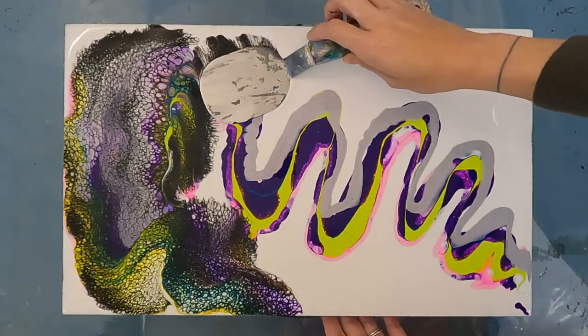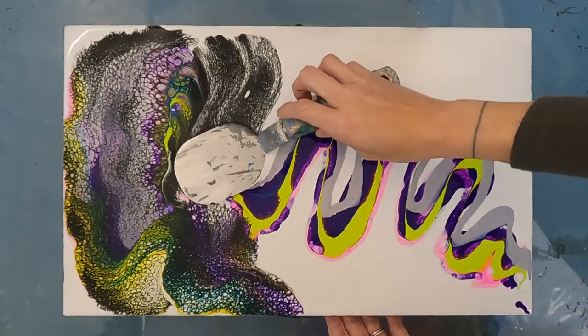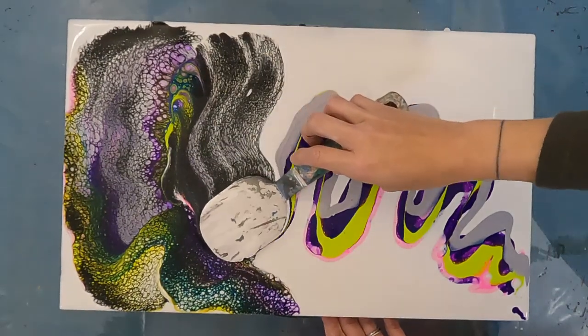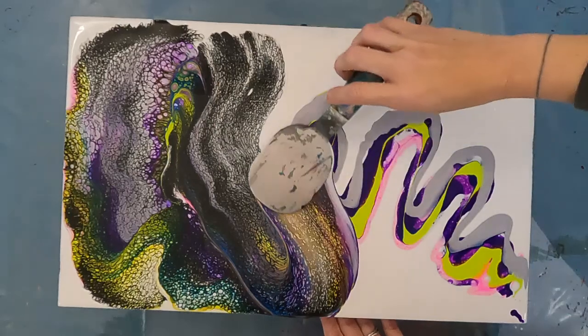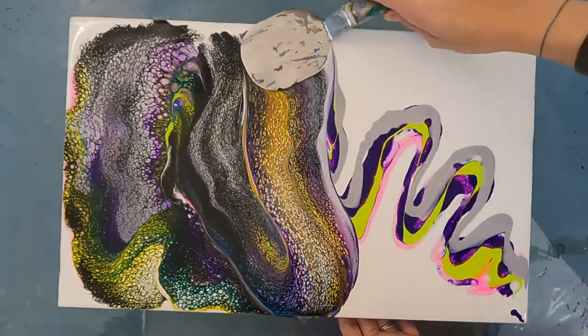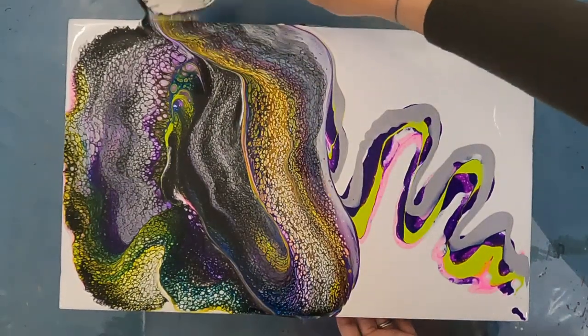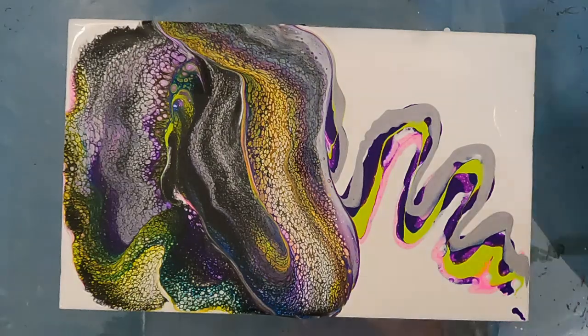I mixed the one drop of silicone into the black 2.0 extremely well instead of my usual light stirs. After that, I just spread a small amount on my palette knife and use that to swipe the activator across the colors on the canvas.